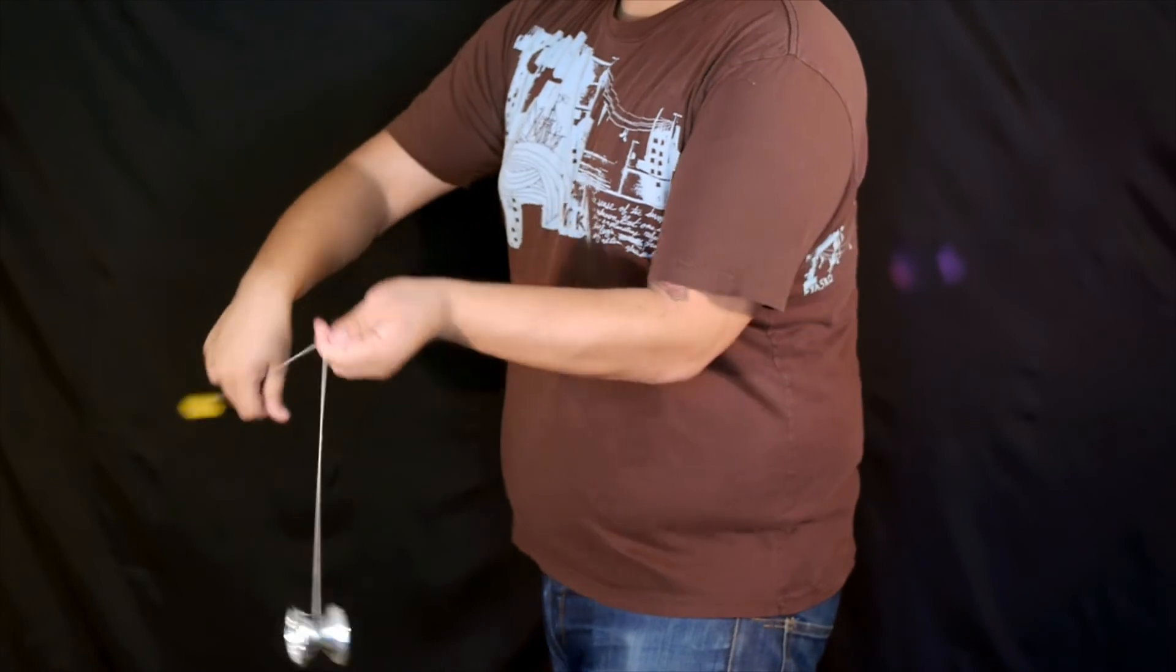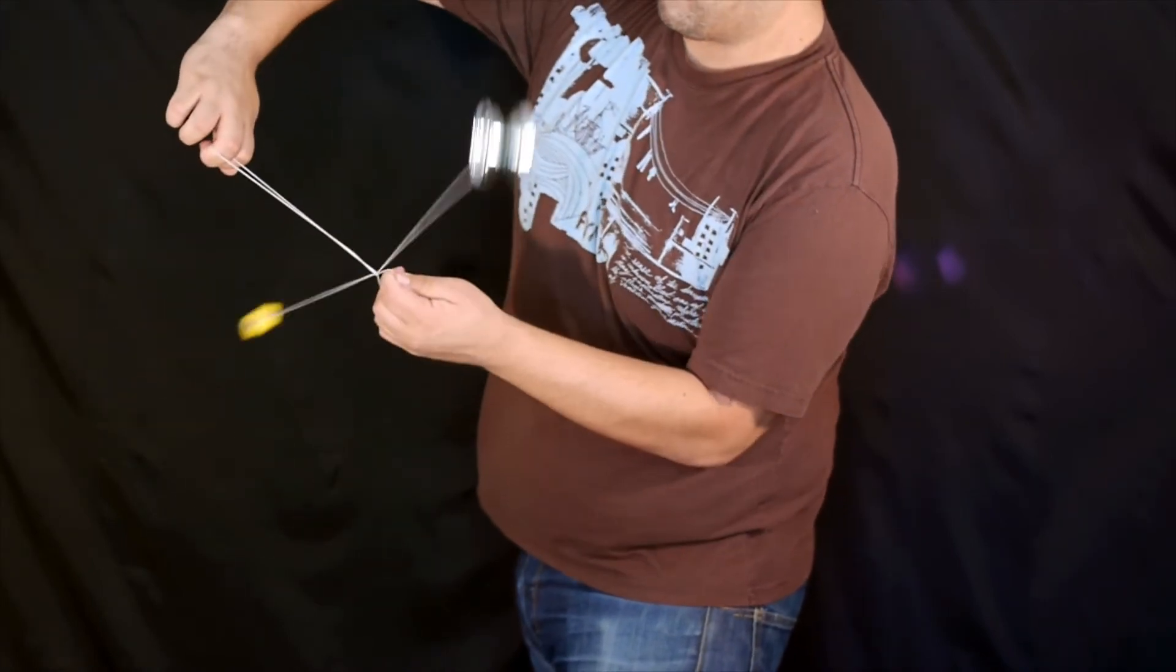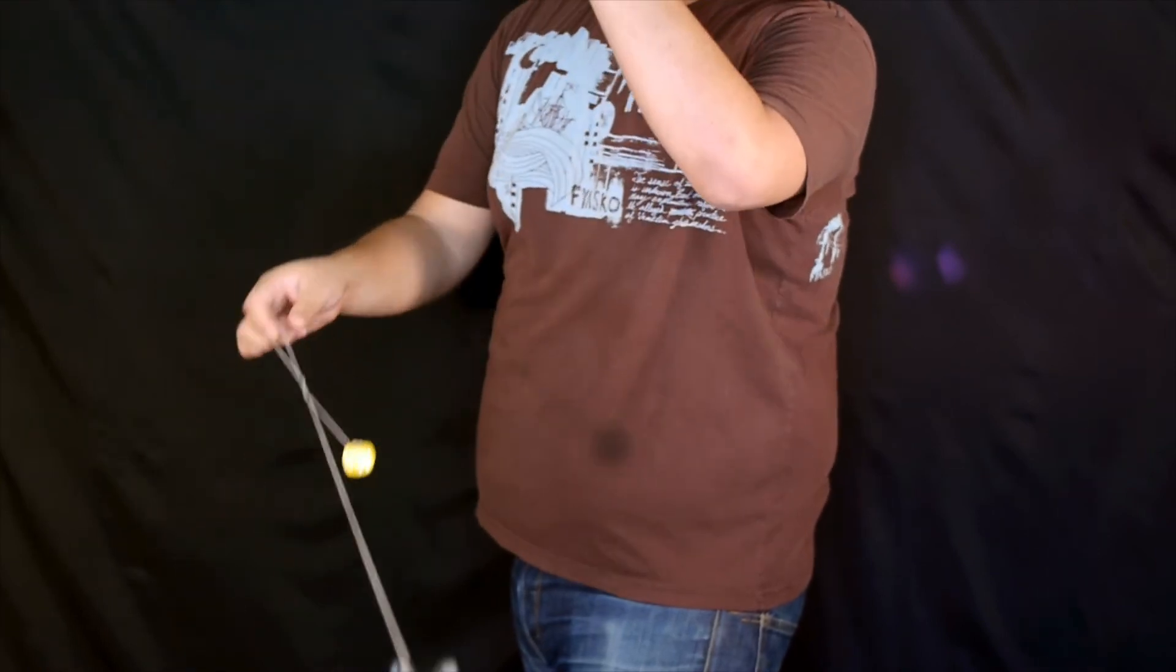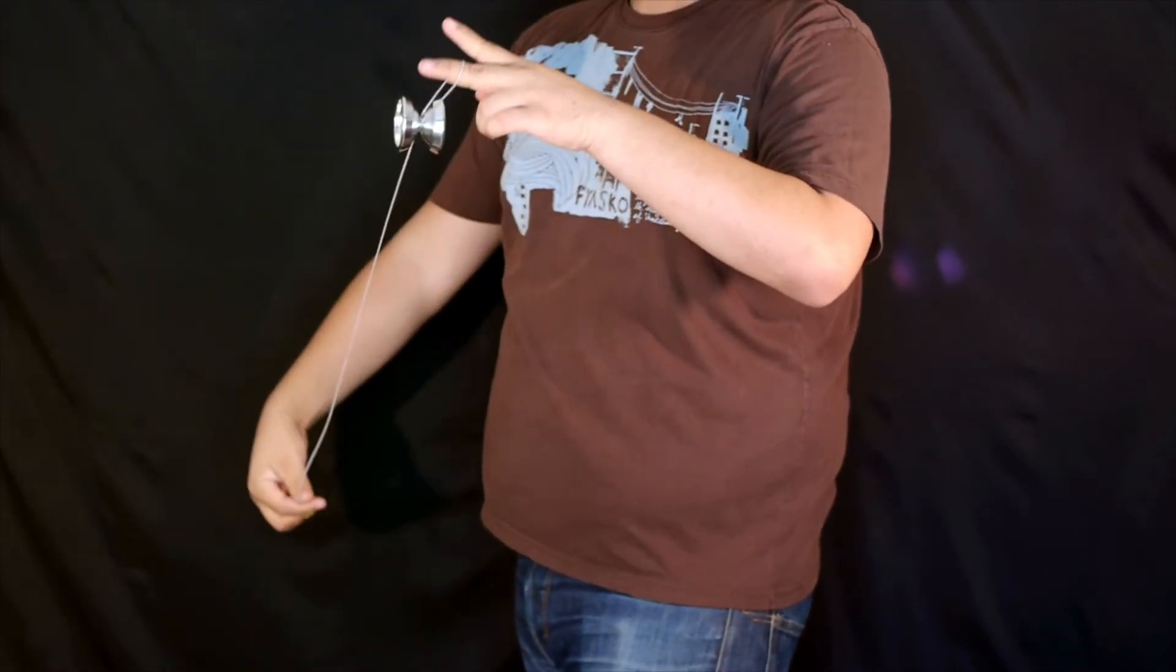Here's another angle to really show how the counterweight is moving on a different plane than the yoyo and then how you cross to cancel everything out and then back to a trapeze, bind and return and that's Chaos Tangler.